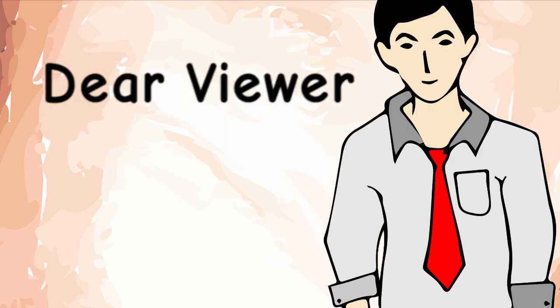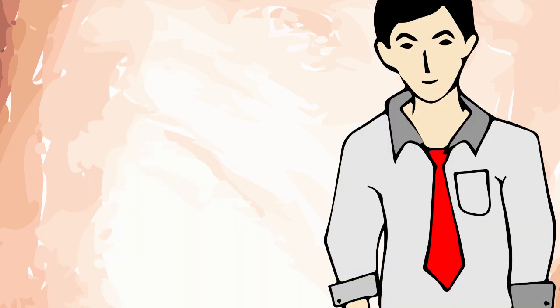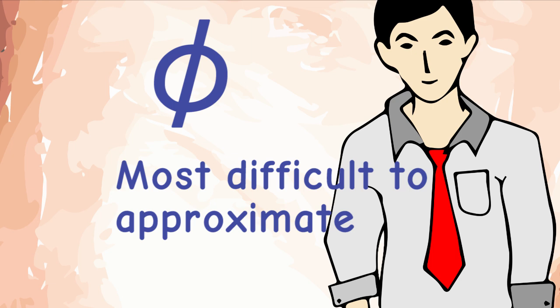Dear viewer, if all of this seems confusing, then trust me, it should. This is number theory that we are talking about. All that you need to know to enjoy the next video, is that the golden ratio is in a sort, the most irrational number. That is, it is the most difficult to approximate by a rational number.